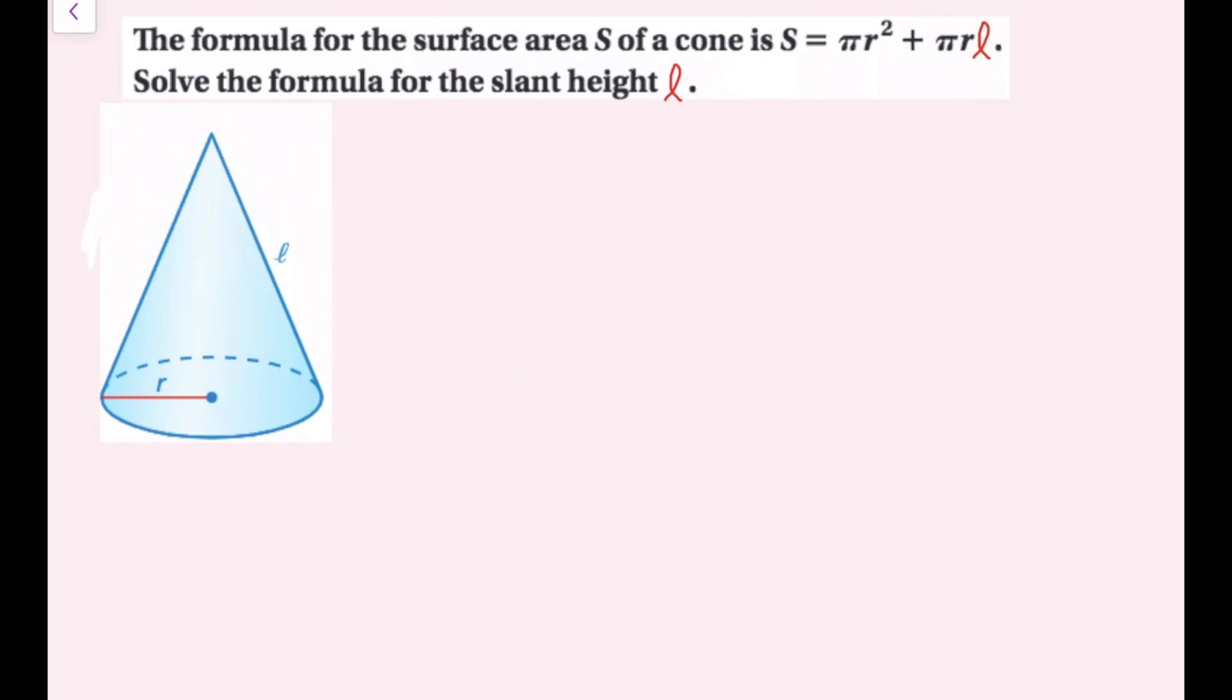The formula for the surface area S of a cone is S equals pi r squared plus pi r L. Solve the formula for the slant height L. Notice the L is in cursive, so you don't confuse the L with a 1. So we know we need to find L. I'm going to do the same thing that I did in the last example. I am going to rewrite my equation. S equals pi r squared plus pi r L. And I want to isolate this L. So the next thing I'm going to do is I want to get rid of every other term that does not have an L in it. So I'm going to get rid of this term, pi r squared, because it does not have an L in it. And it's positive right here. So I'm going to get rid of this plus pi r squared by subtracting pi r squared on both sides.